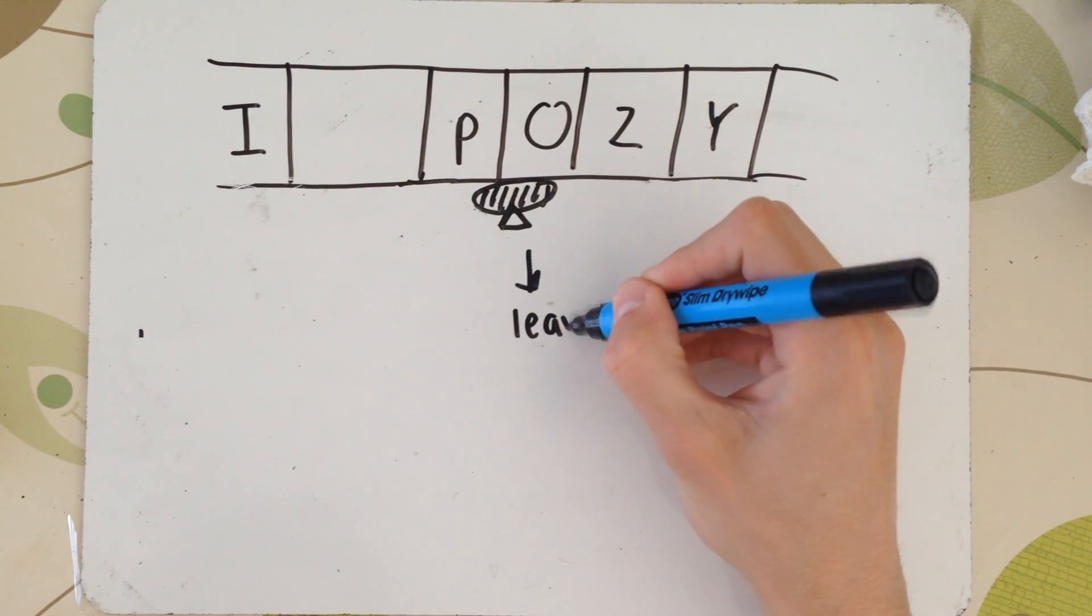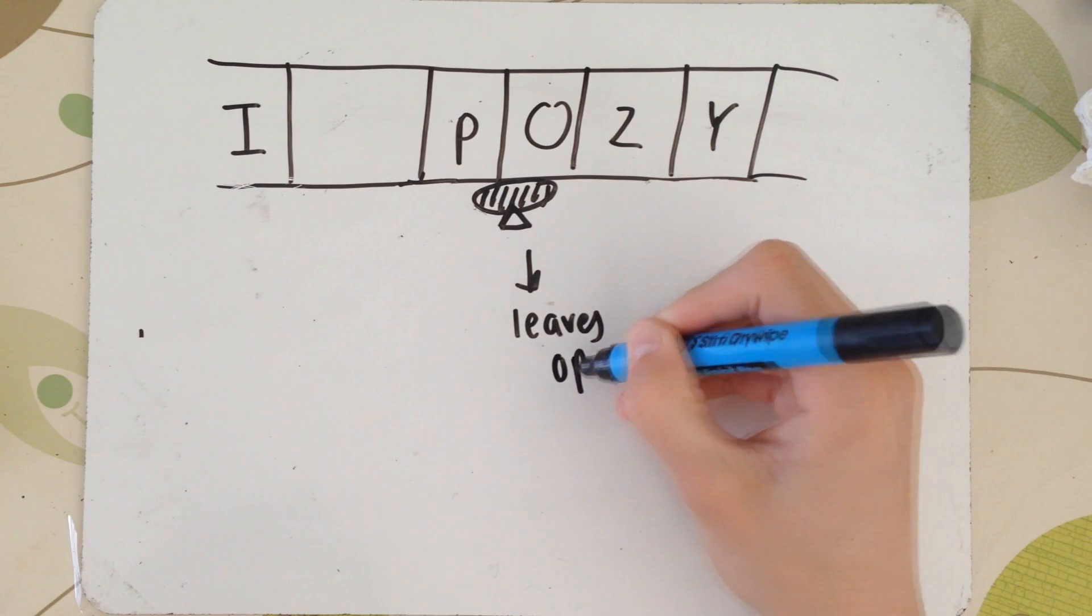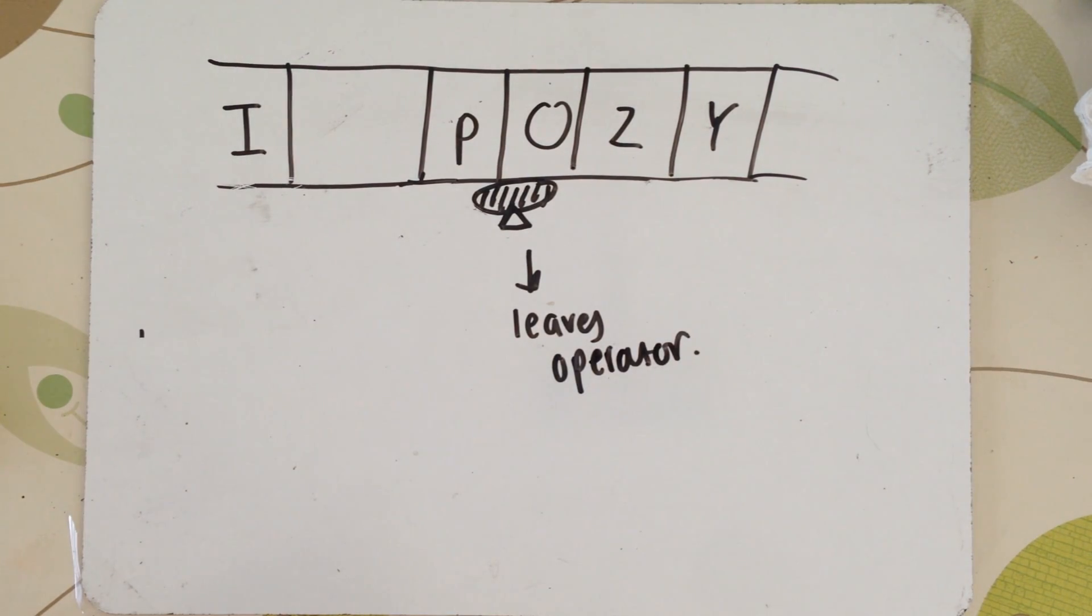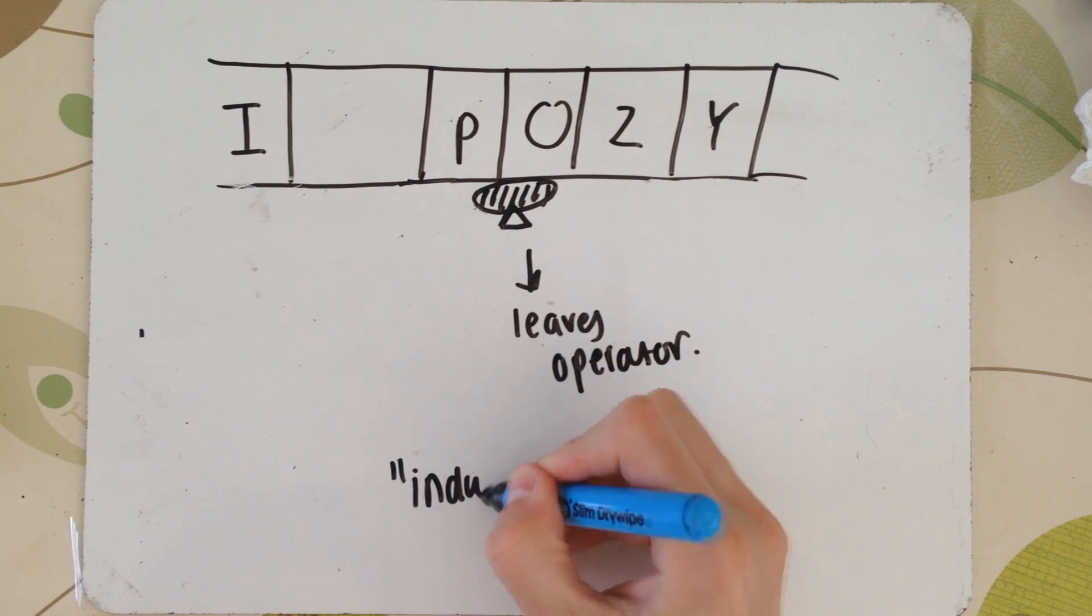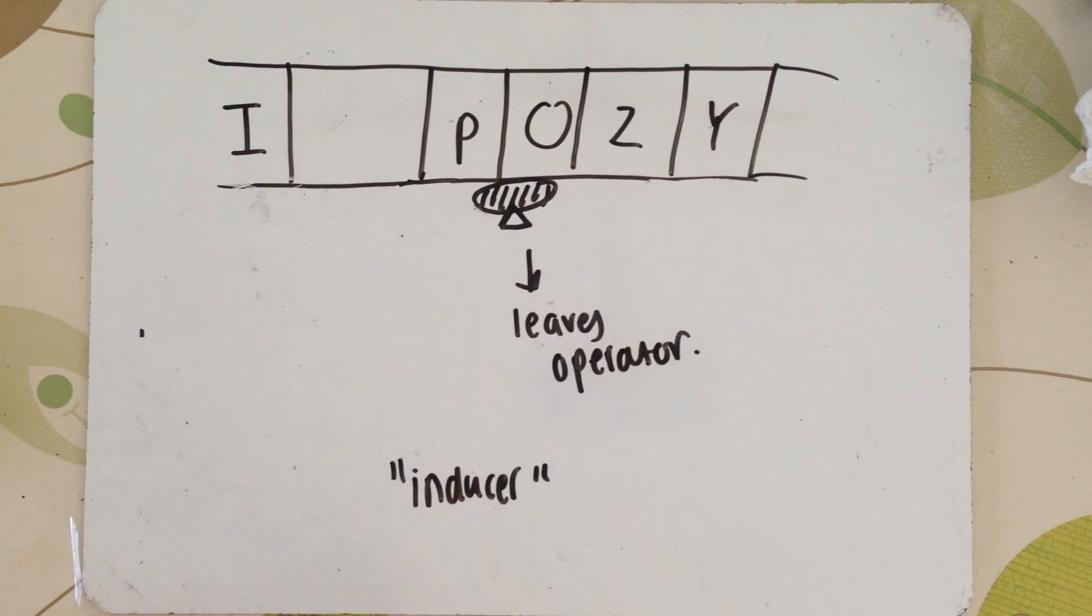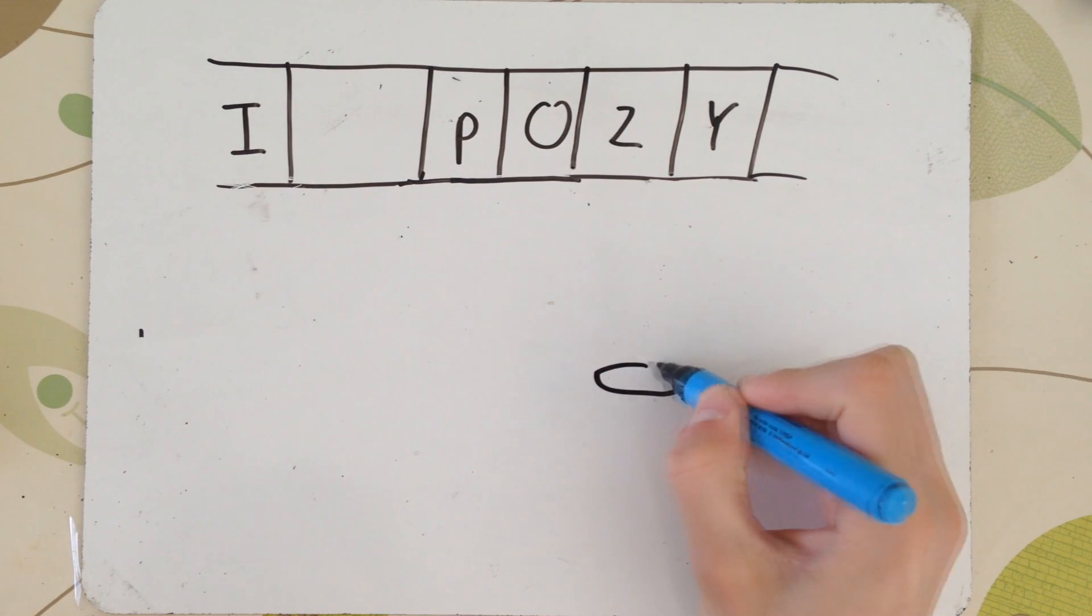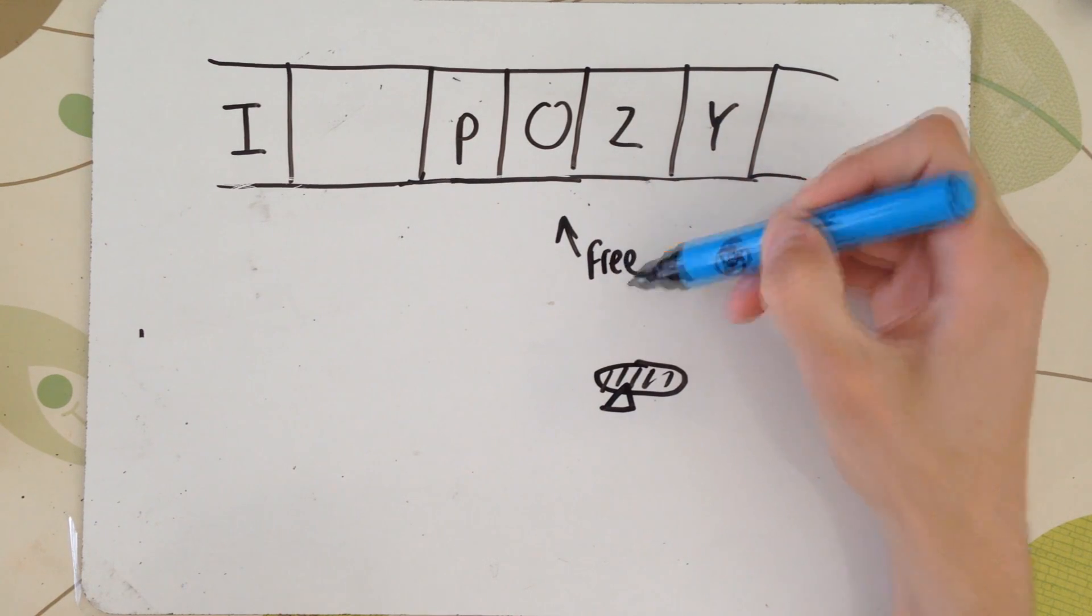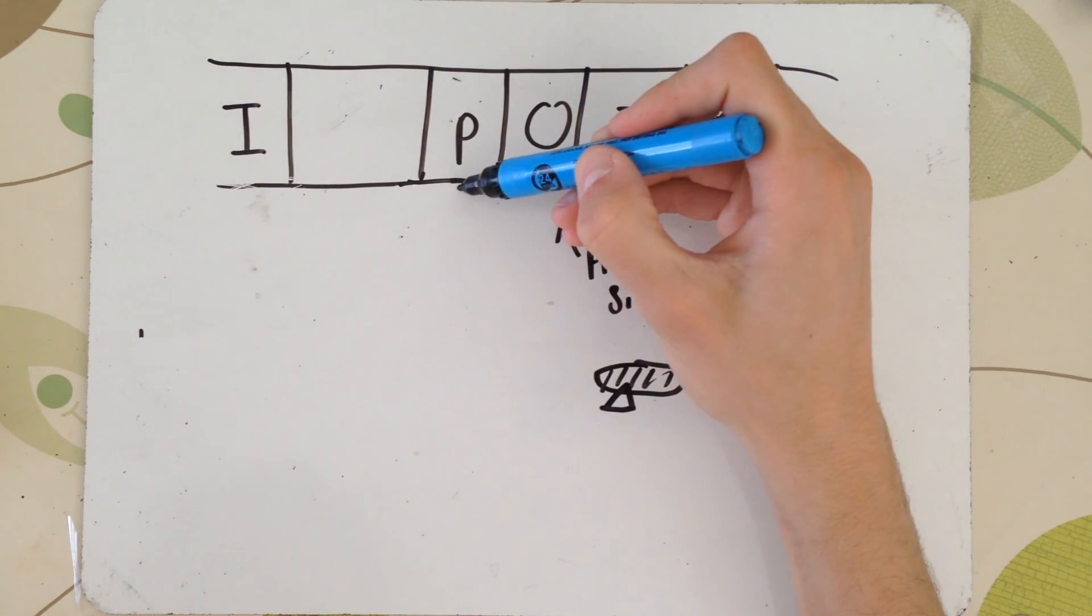And what happens is, one of these lactose molecules, as you can see, are represented with a triangle, will bind to the repressor protein. And what this does, this changes the shape of the repressor protein, as it binds in a different binding site, an allosteric site, causing it to actually leave the operator and promoter region. And for this reason, the lactose is known as an inducer molecule.